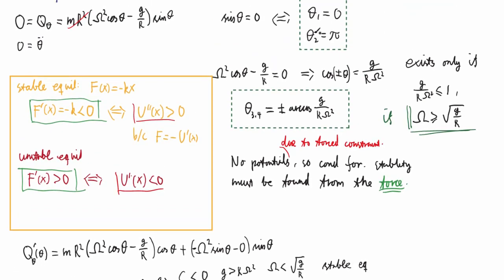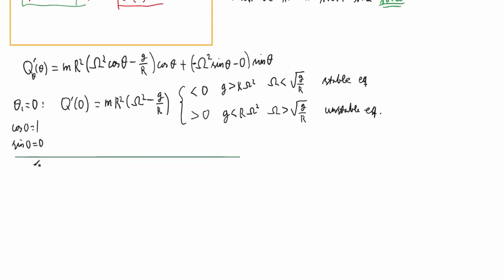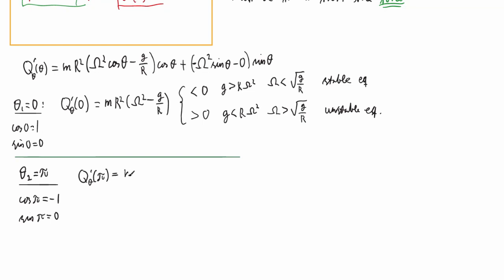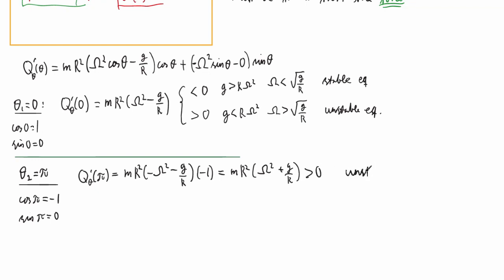The second equilibrium point is theta_2 equals pi. When theta equals pi, cosine of pi is minus 1 and sine of pi is 0. Looking at the derivative of the generalized force at this point, we get MR-squared times (omega-squared plus G over R), which is always greater than zero — so theta_2 is always an unstable equilibrium. That's not too surprising, because theta equals pi corresponds to the bead being at the top of the hoop.